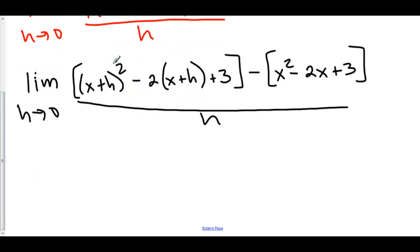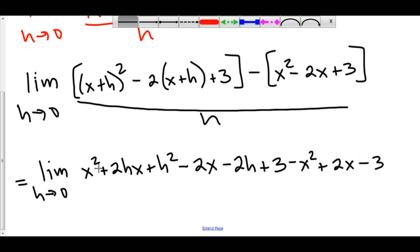First, let's square out the x plus h squared. Here we have the limit as h approaches 0 of x squared plus 2hx plus h squared. Let's distribute the negative 2, minus 2x minus 2h, and then plus 3, and we'll distribute this negative to everything inside of our function. Here we have minus x squared plus 2x minus 3, and this is all over h.